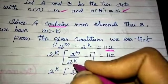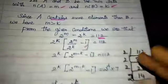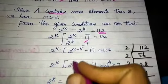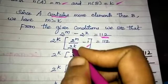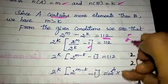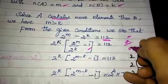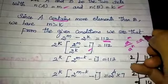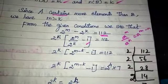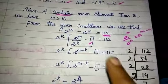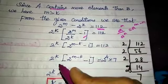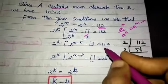2^K is divided out. Using the property a^m divided by a^n equals a^(m-n), we get 2^K times (2^(M-K) minus 1) equal to 112.